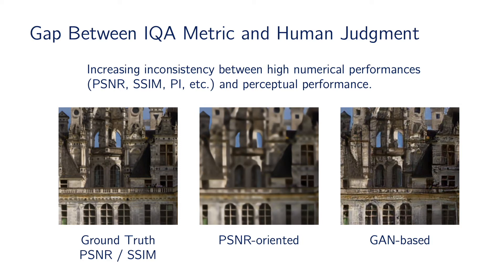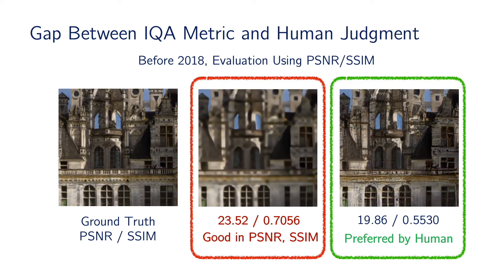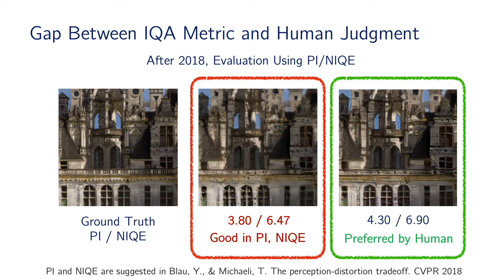We observe an increasing inconsistency between high numerical performance and perceptual performance. For example, when evaluating PSNR-oriented and GAN-based algorithms, the commonly used PSNR and SSIM are in contrast to the human judgments. As shown in the figures, human prefers the green-boxed GAN-based output as it contains more texture. However, it performs poorly when evaluated using PSNR and SSIM. The same situation also appears when evaluating GAN-based algorithms with advanced perceptual metrics such as PI and NIQE. Algorithms with high PI and NIQE performance could still produce images with obvious unrealistic artifacts.